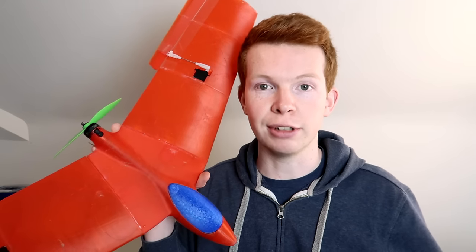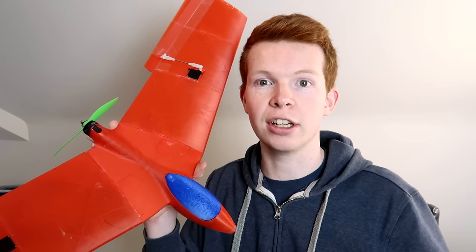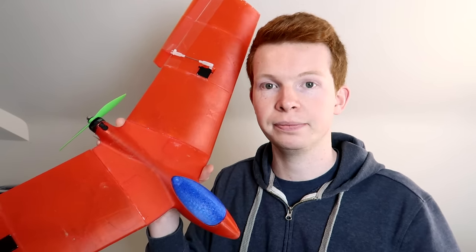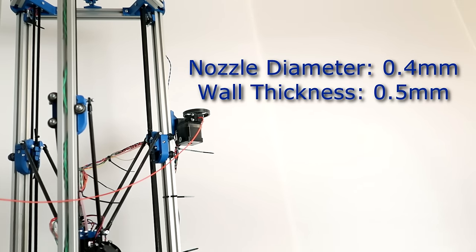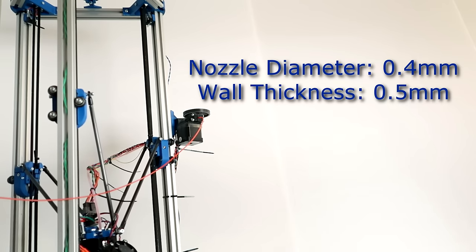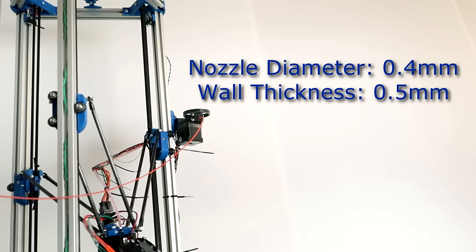The receiver will entirely depend on what transmitter you already have or what you're going to purchase, but I'm running the FrSky Taranis with a FrSky X4R inside. So onto the printer settings. On my 3D printer I have a 0.4 millimeter nozzle and I extrude with a 0.5 millimeter wall thickness.